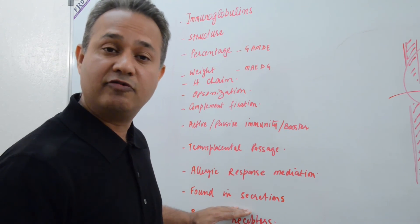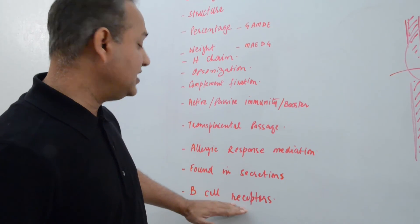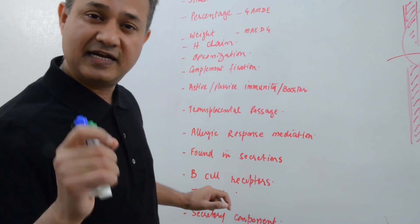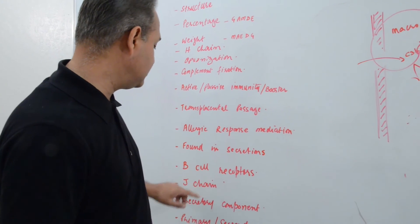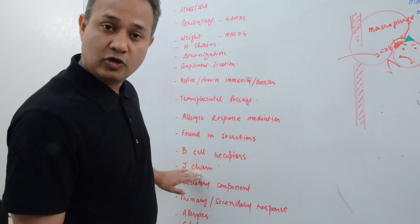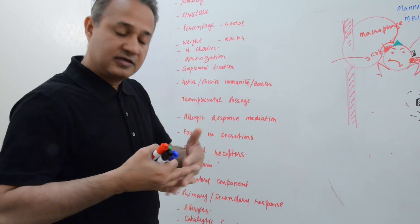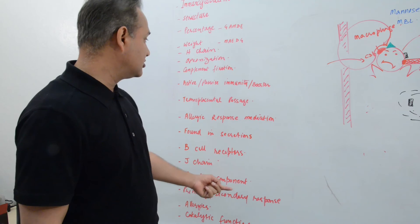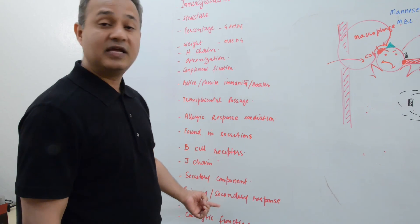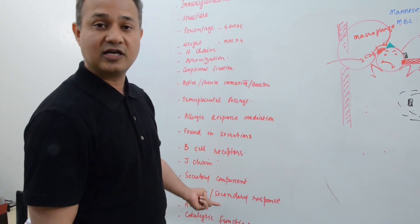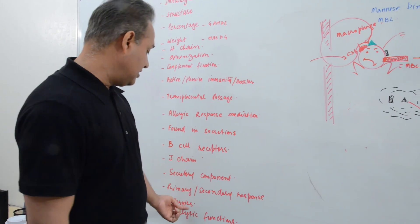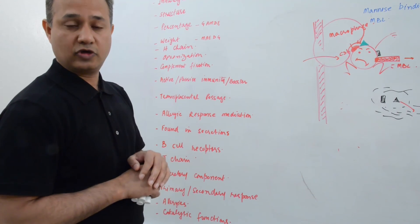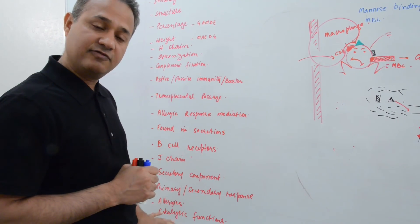Then, allergic response, and what is the role of immunoglobulin in those responses. Then, what immunoglobulins are found in the secretions. Then, what B-cell receptors are. We just talked about IgM and IgD. We'll talk about memory B-cells that have IgG as a receptor. We'll talk about J-chain. So some immunoglobulins are present and combined together as an aggregate. So J-chain is present there. Secretory components, then primary and secondary response. We are actually talking about the primary response right now, and then what happens in the allergy. And then catalytic function of the immunoglobulin.